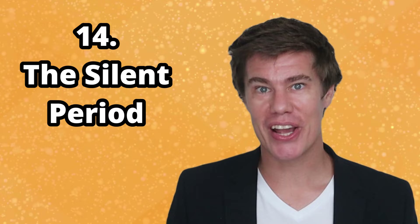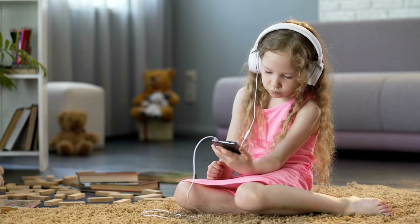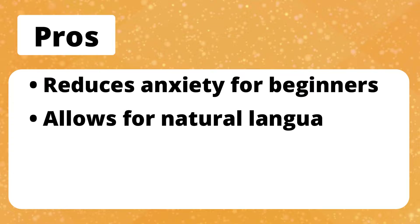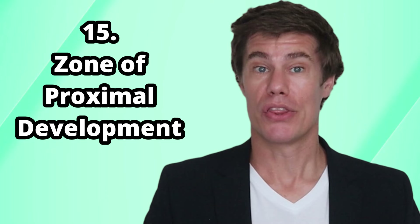The silent period is a phase in language acquisition during which beginners observe and absorb the language before actively participating in speaking. This method allows students to build confidence gradually, reducing anxiety for novice learners. Example: give beginners time to listen and observe before requiring spoken responses. Pros: reduces anxiety for beginners, allows for natural language acquisition, builds confidence gradually. Cons: may hinder speaking progress, requires patience from teachers and peers, limited for advanced learners.